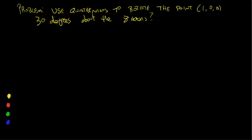Hello everyone, this is Mr. 13 Things and I'm wrapping up this little series on doing first extrudes and then rotates — a revolve using Inventor — with this and then with math. The problem is: use quaternions to rotate the point (1, 0, 0) 30 degrees — that's a positive 30 degrees, which would be counterclockwise about the z-axis. I've set up everything here all on the same layer.